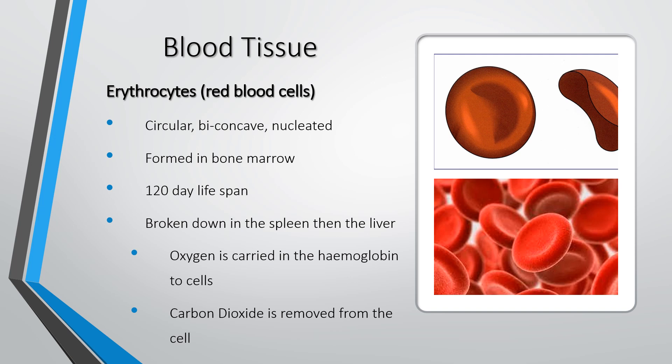The erythrocytes are the red blood cells. They're circular, biconcave and nucleated, and formed in the bone marrow. They only live for 120 days, then they're broken down in the spleen and taken to the liver where they are recycled as bile. Oxygen is carried in the haemoglobin within the erythrocytes, and carbon dioxide is removed from the cell.